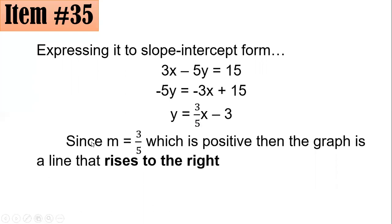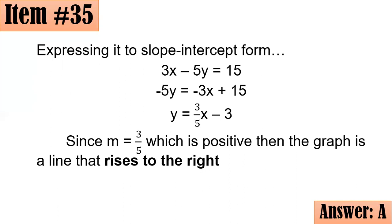The coefficient of x is three-fifths, which is our slope. Since the slope is positive, the graph is a line that rises to the right — letter A. If the slope were negative, it falls to the right. If the slope equals zero, it's a horizontal line. If the slope is undefined, it's a vertical line.